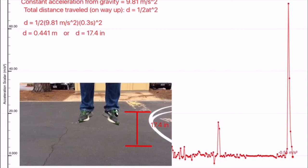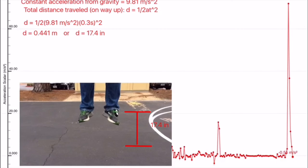Because you experience a constant acceleration from gravity, 9.81 meters per second squared, we can use the formula distance equals one-half acceleration times time squared to find the distance traveled on your way up.